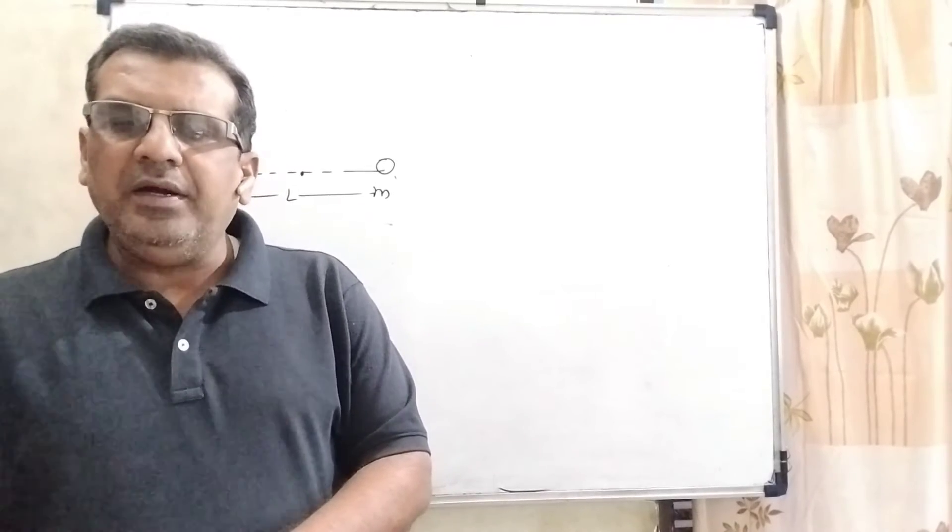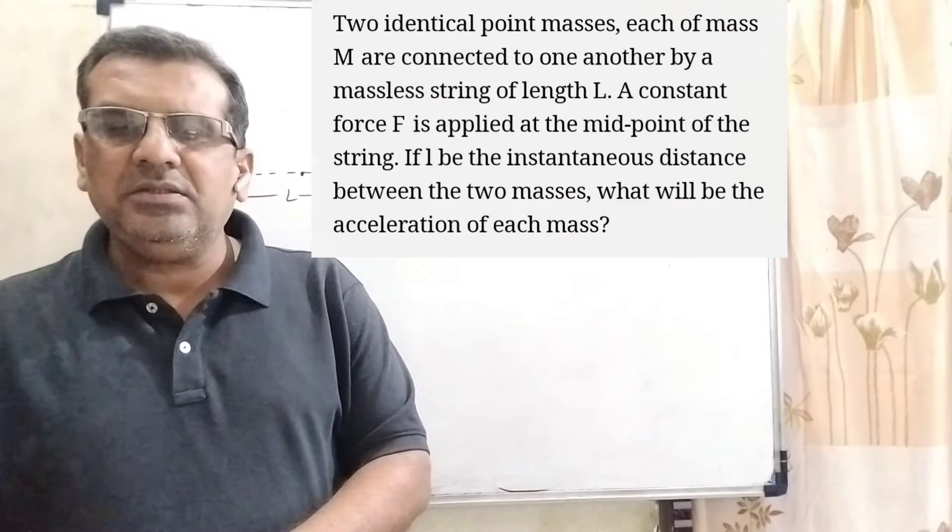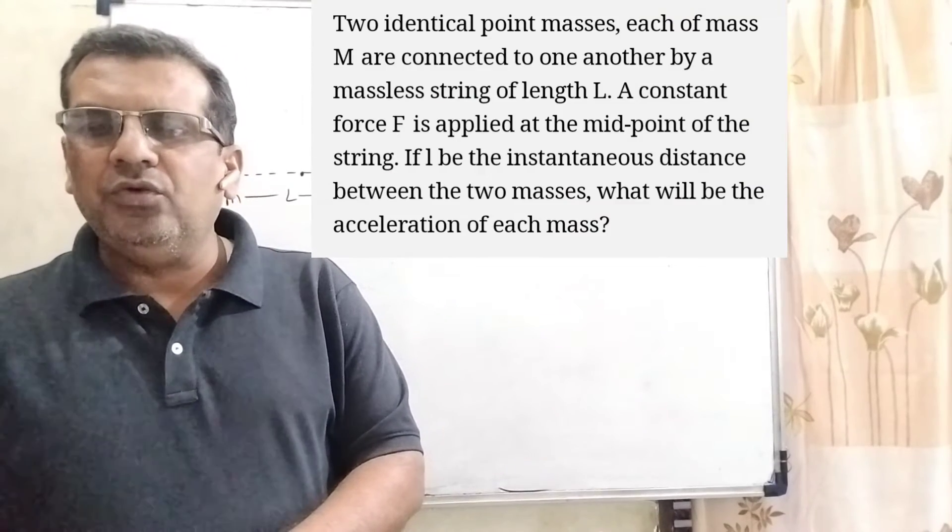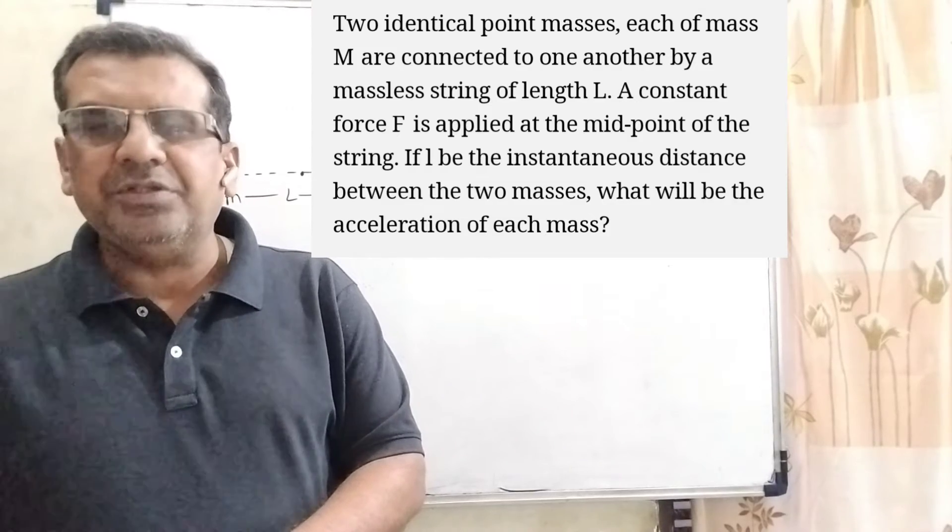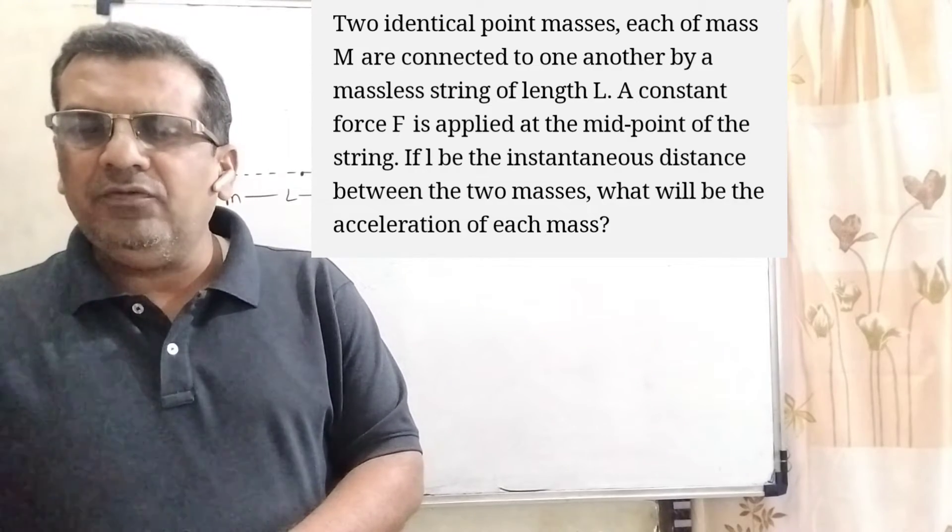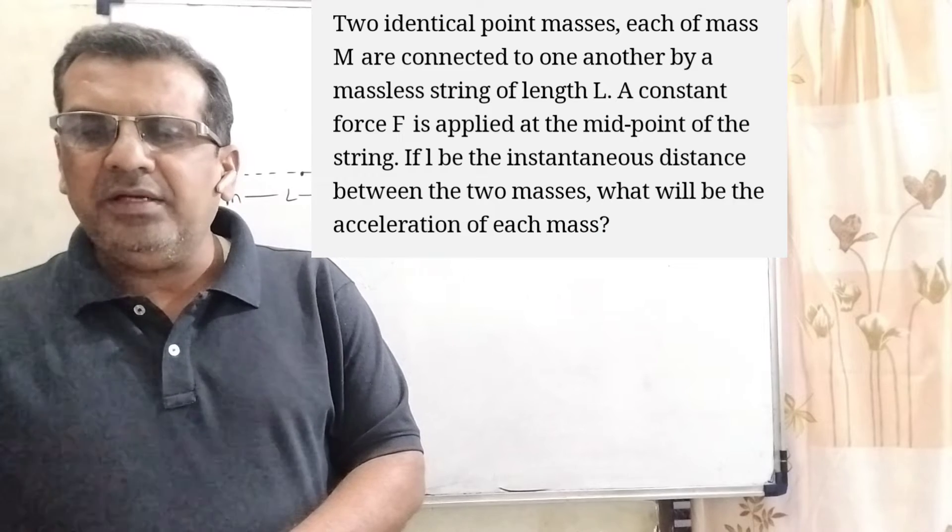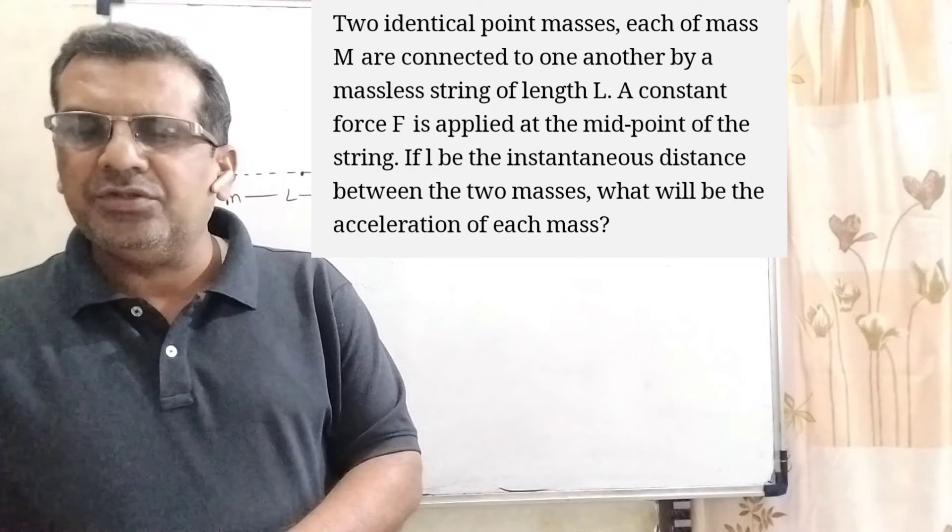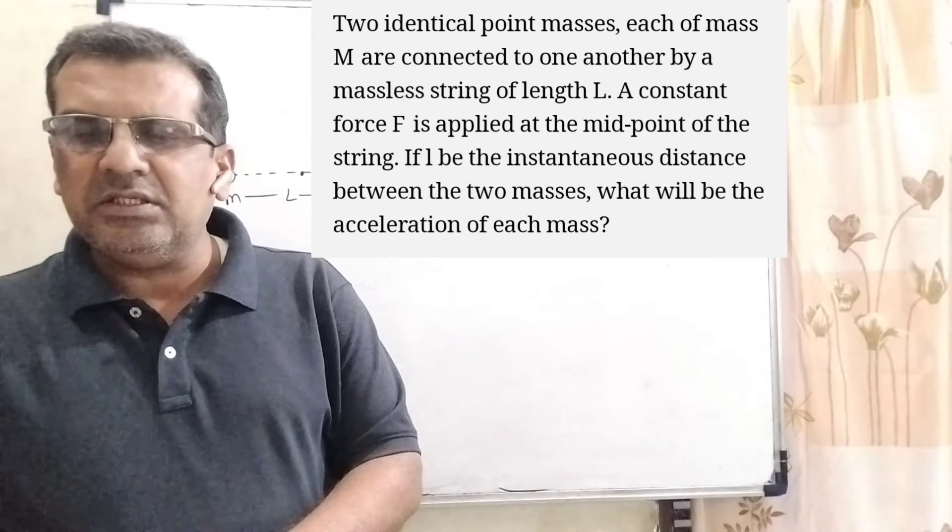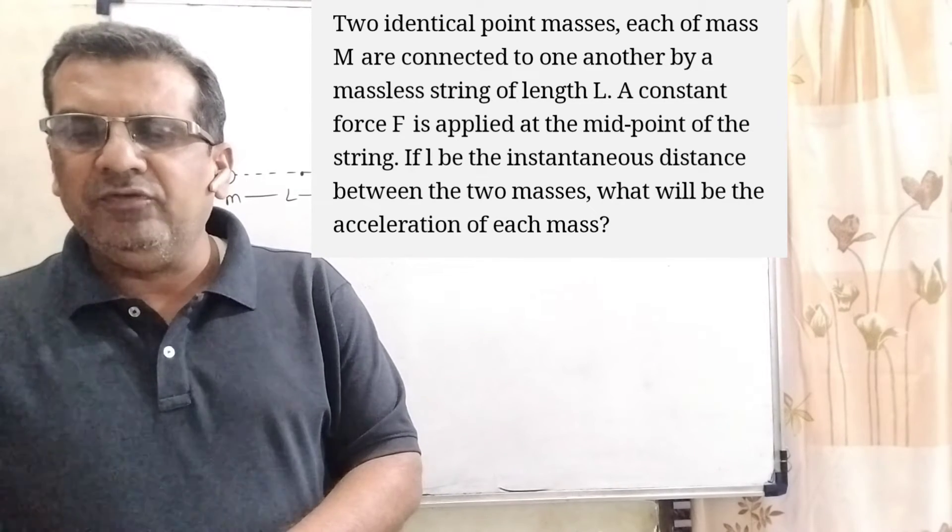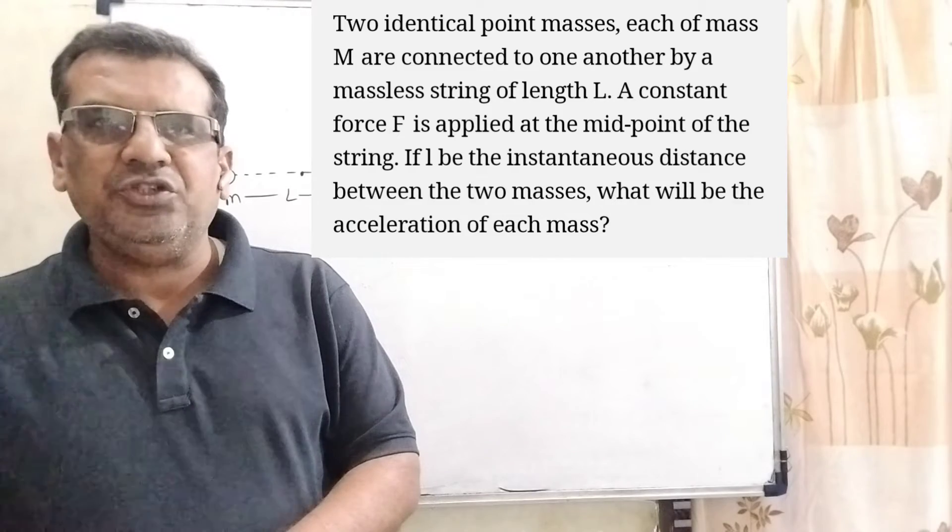Now here is the question. Two identical point masses, each of mass M, are connected to one another by a massless string of length L. A constant force F is applied at the midpoint of the string. If l be the instantaneous distance between the two masses, find the acceleration of each mass.